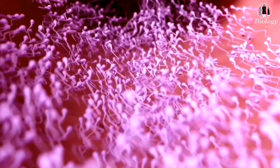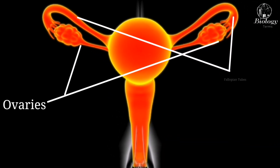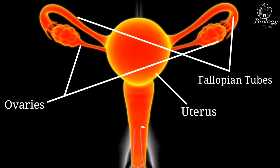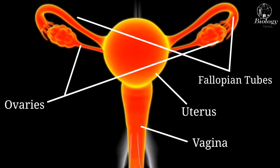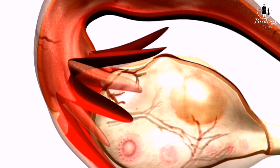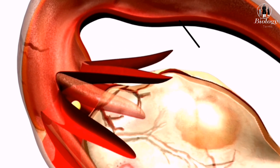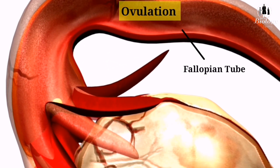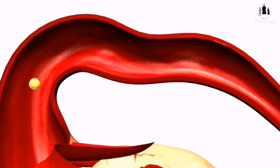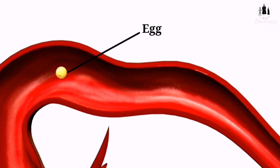The female reproductive system includes the ovaries, fallopian tubes, uterus, and vagina. Each month, one of the ovaries releases an egg cell in a process called ovulation. The egg cell then travels down the fallopian tube towards the uterus.